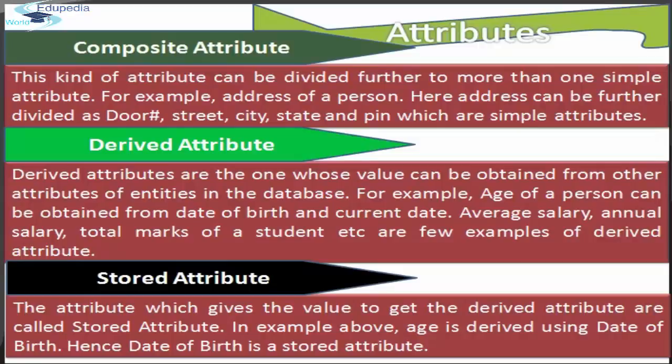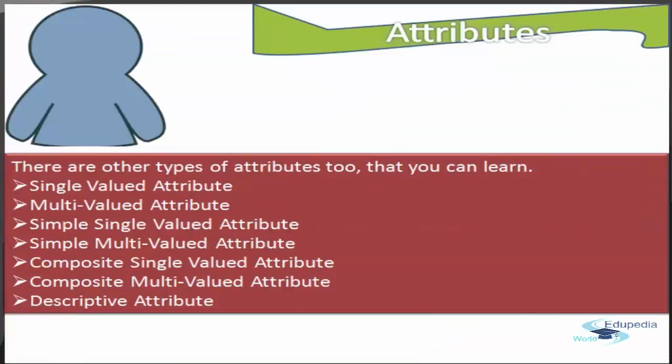The third type is the stored attribute. The attribute which provides the value used to derive a derived attribute is called the stored attribute. In our example, stored attributes can be date of birth, salary, or monthly salary. Age is derived using date of birth, so date of birth is the stored attribute.